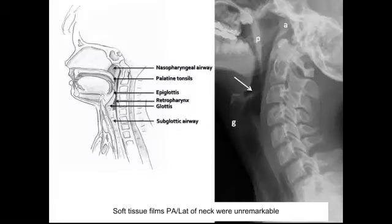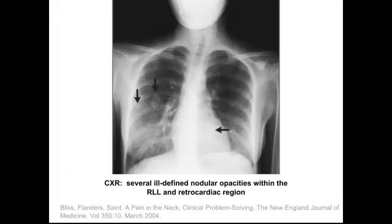At this point, with the difficulty swallowing and the throat pain, you get a soft tissue film — PA lateral of the neck — which in this case is unremarkable. Because of the cough and the fever, you also decide to get a chest X-ray, and this shows some significant findings: several ill-defined nodular opacities within the right lower lobe and retrocardiac region.